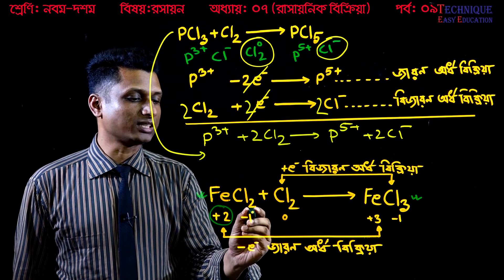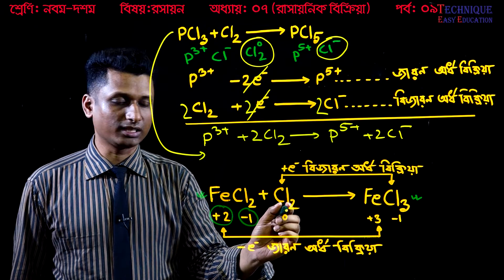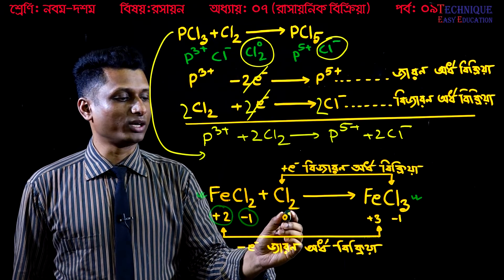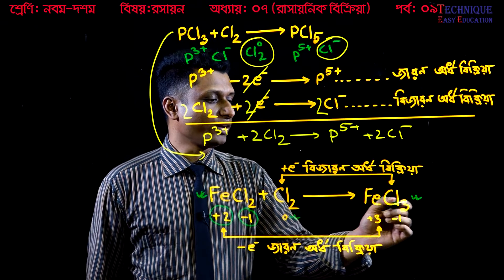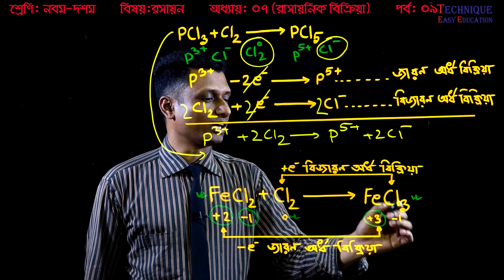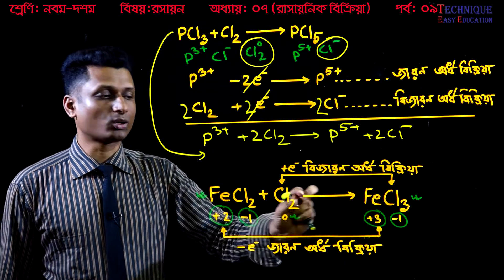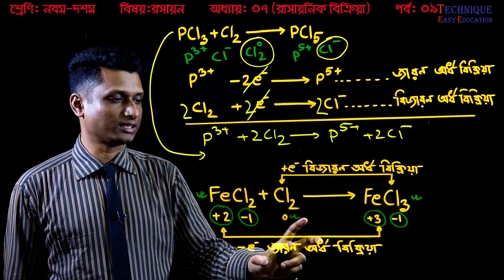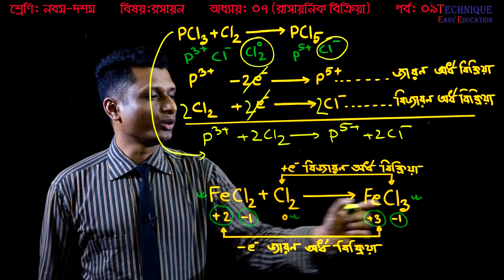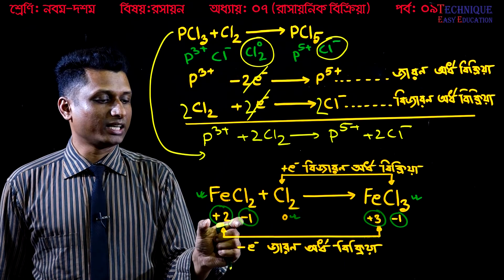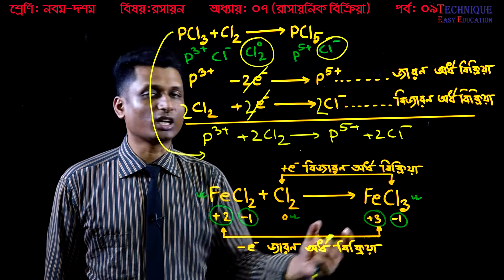The iron in ferrous chloride has an oxidation state of plus 2, and chlorine is minus 1. In ferric chloride, chlorine is also minus 1. So for iron: 2 minus 0 gives class 3.